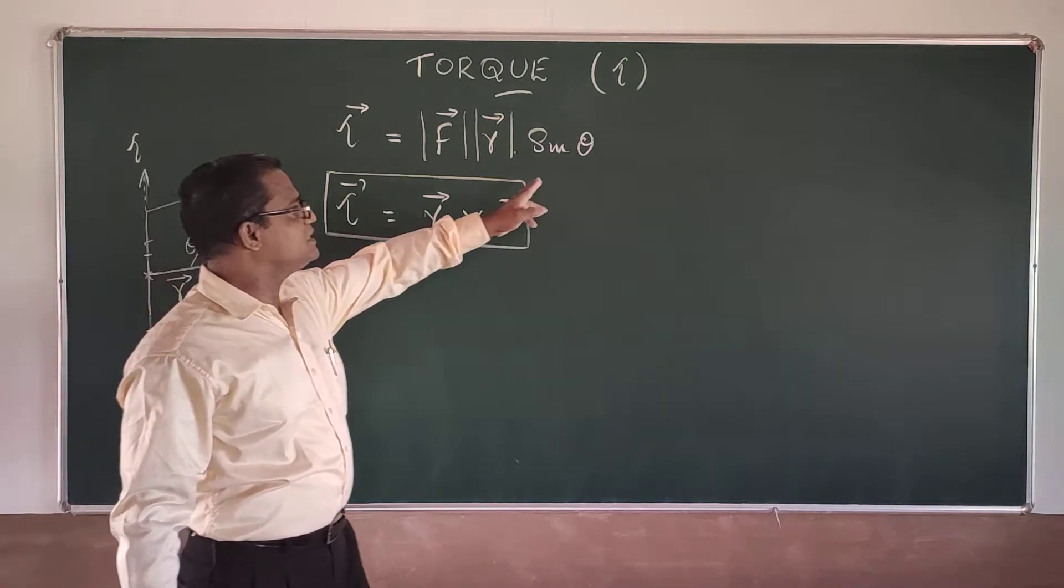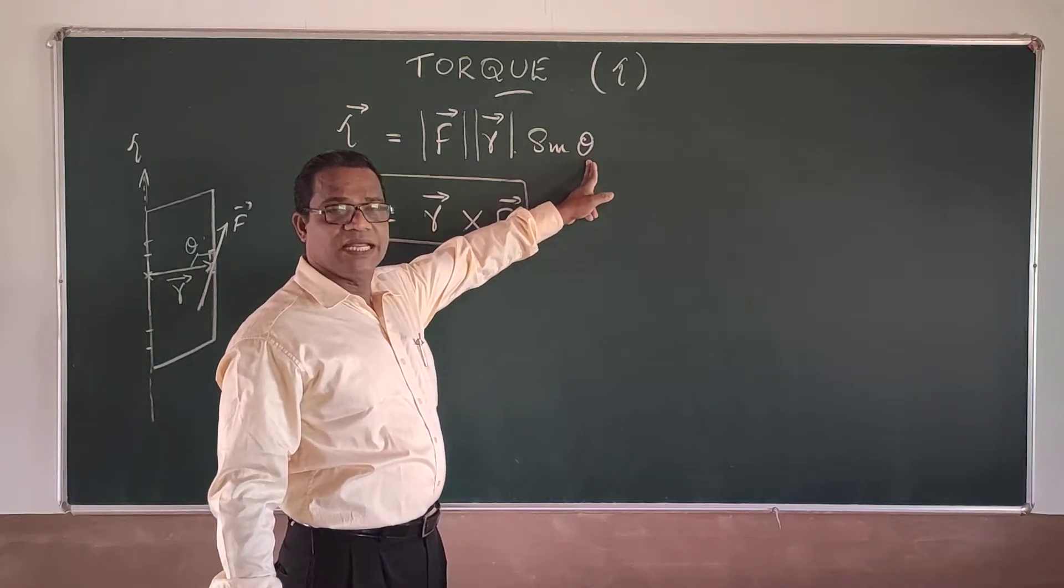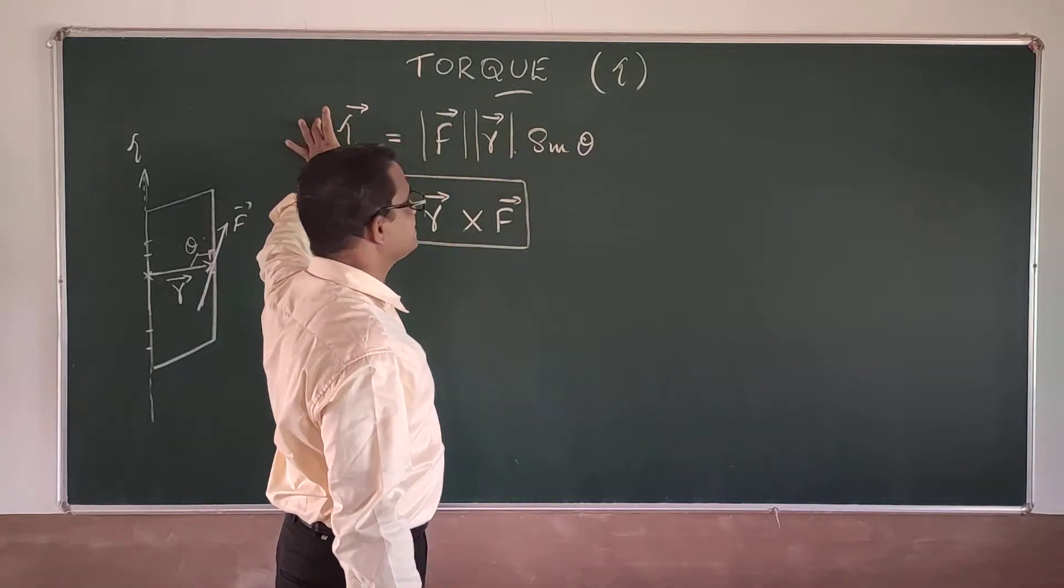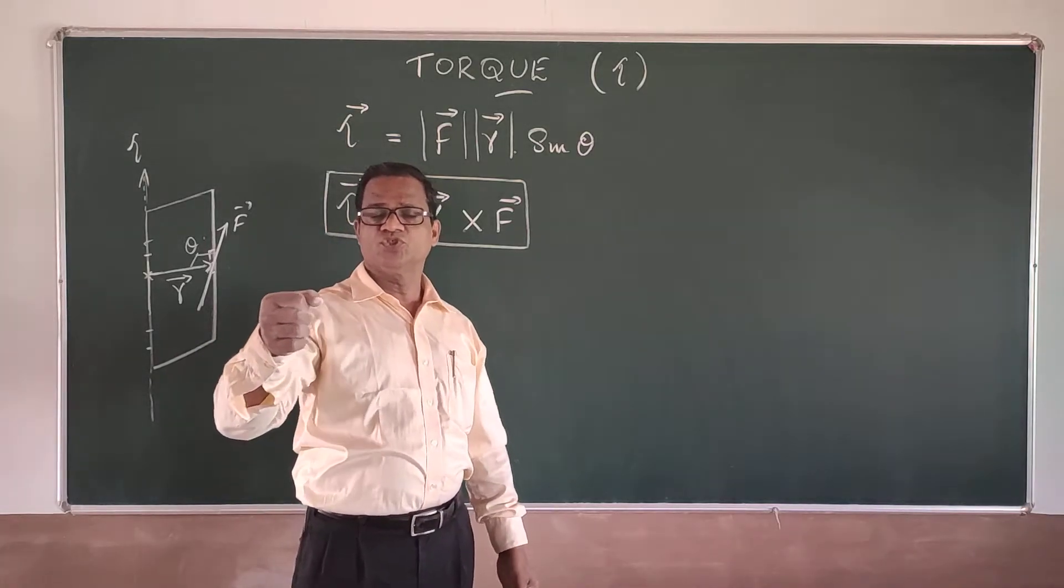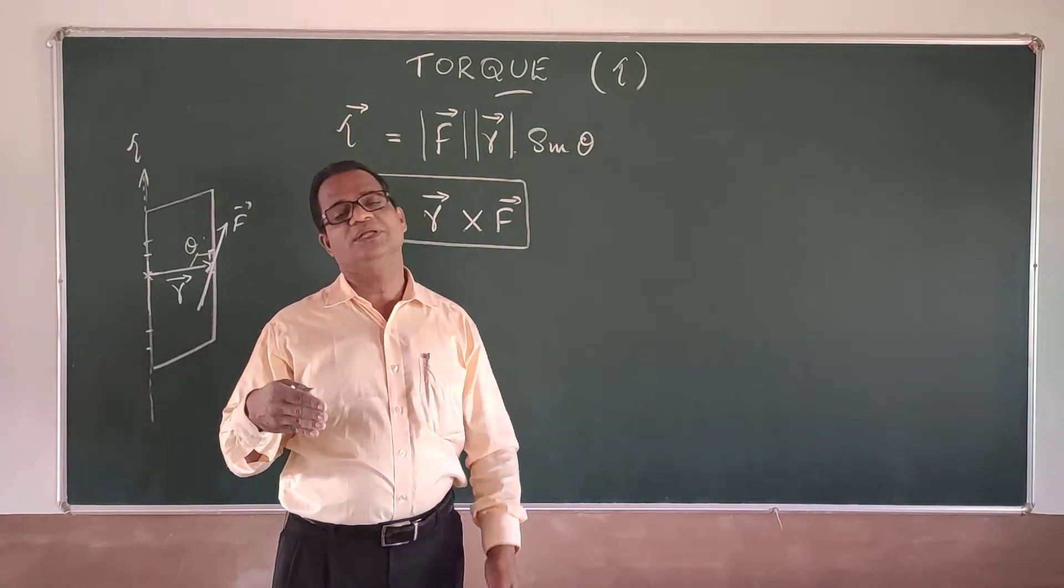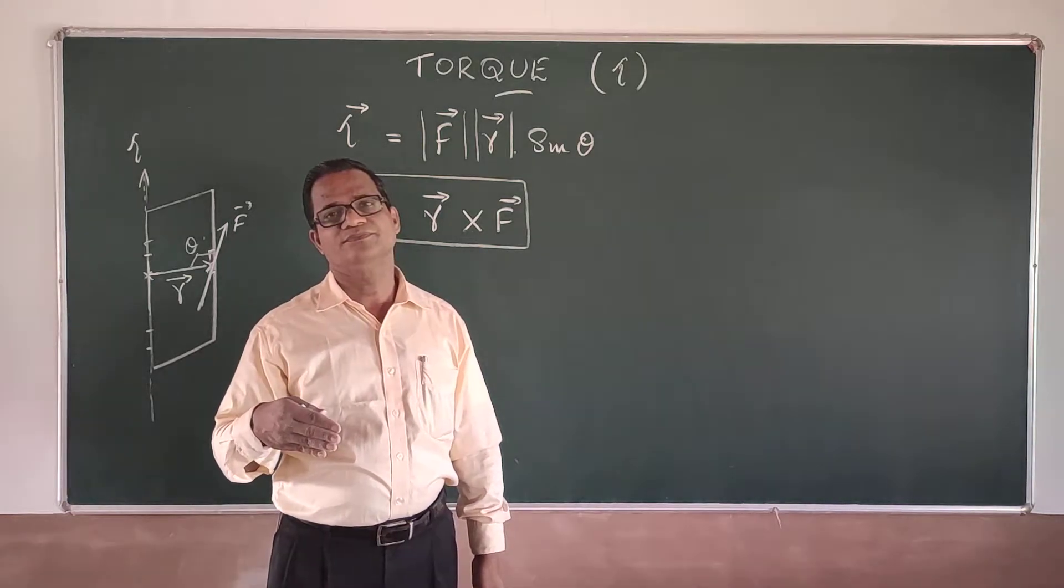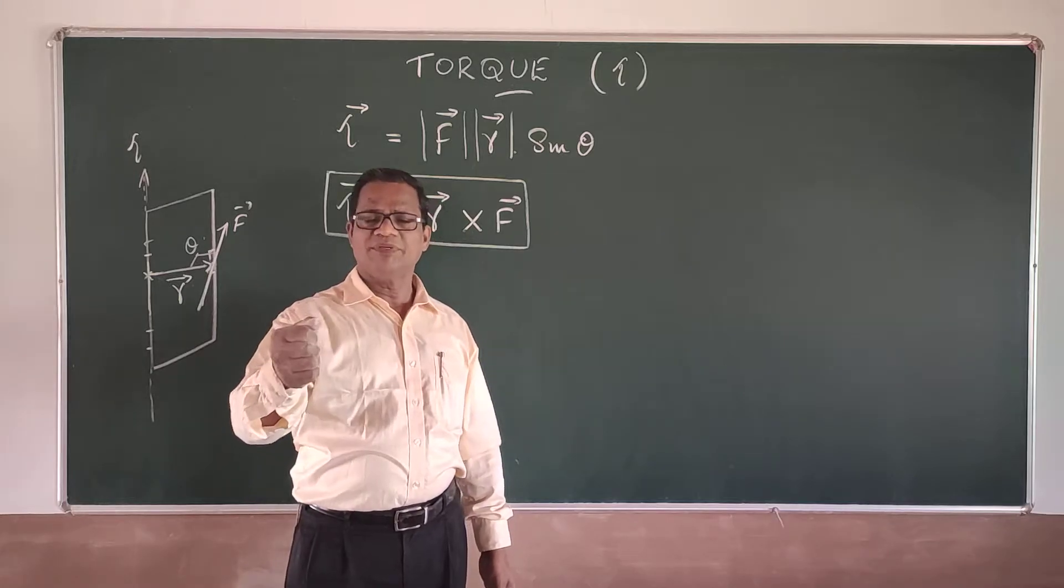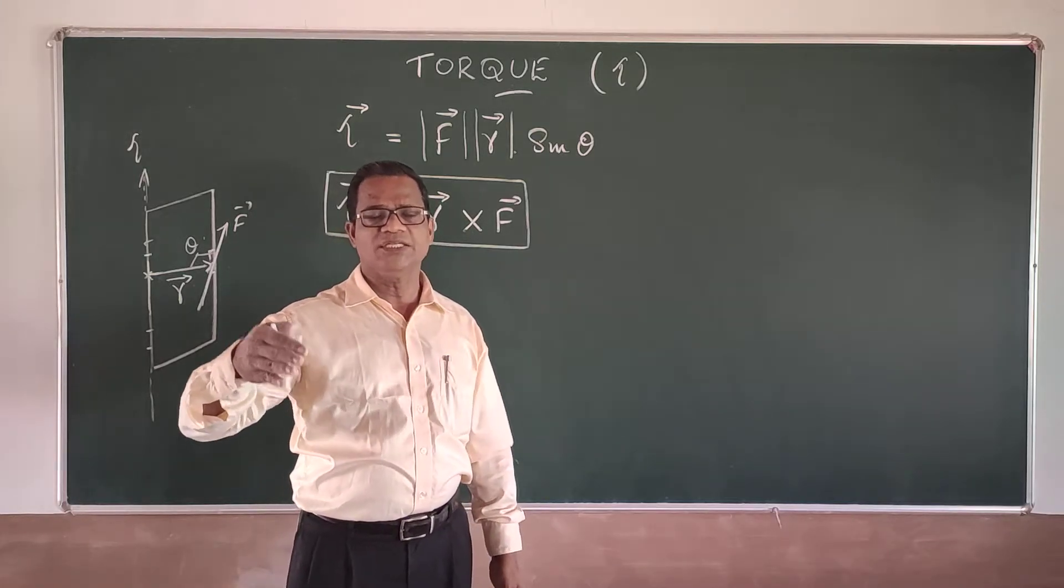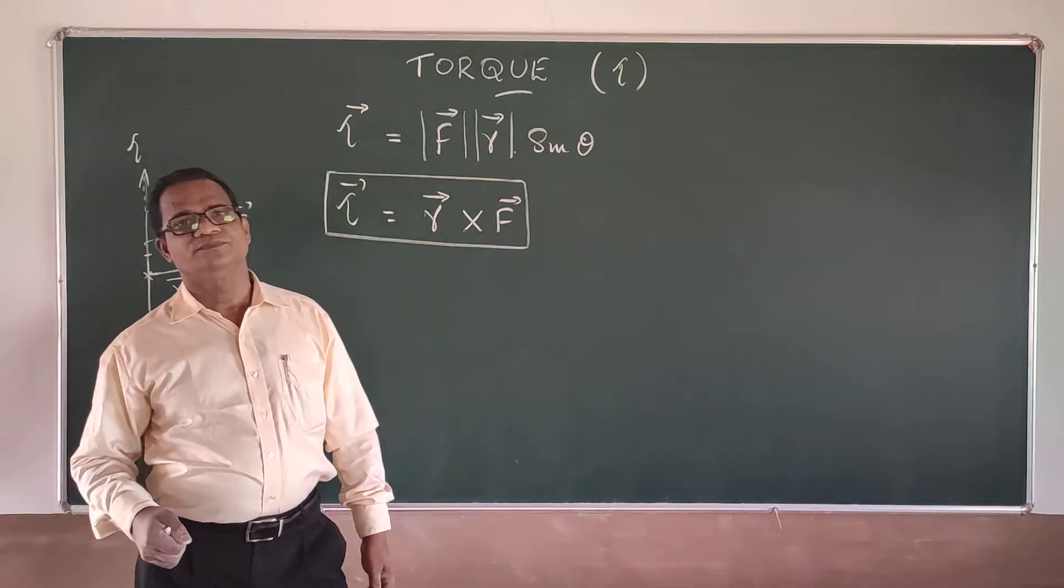Now you see, if theta is maximum, that is theta is 90 degrees, the torque will be maximum. So as you hold the handle on the door and push or pull it, the action of force comes perpendicular to the distance R only. That happens directly, that is why the handle is fixed at the far end in that way.